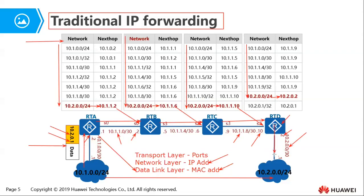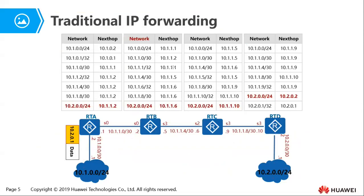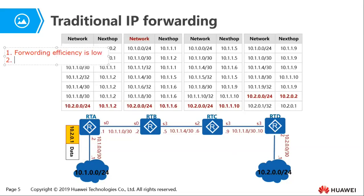Eventually, the packet is delivered to the destination network, and the device in that network receives it. In summary, that is how traditional IP forwarding works. A few things to note: number one, the forwarding efficiency is low. Number two, it is connectionless oriented.